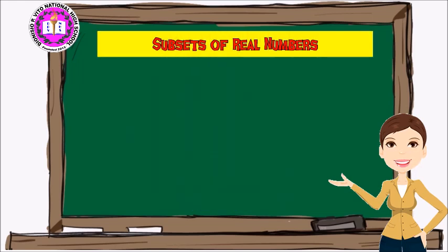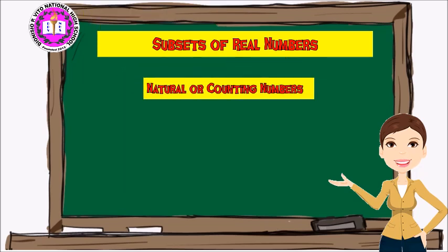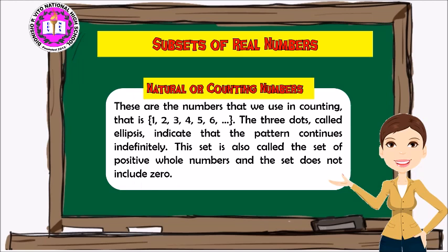Now let's have the subsets of real numbers. The first subset is the natural or counting numbers. These are the numbers that we use in counting: 1, 2, 3, 4, 5, 6, and so on. The three dots, called ellipses, indicate that the pattern continues indefinitely. This set is also called the set of positive whole numbers, and the set does not include zero.